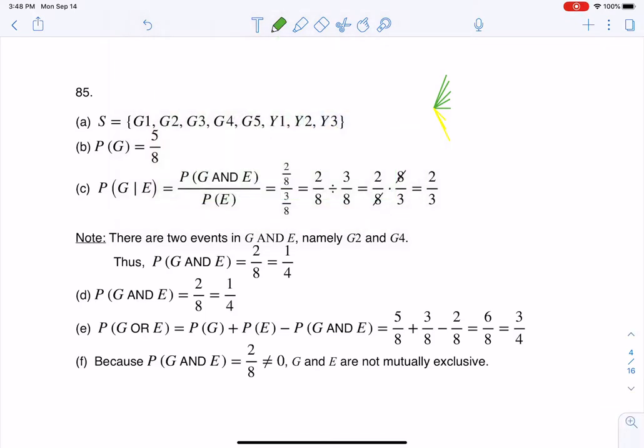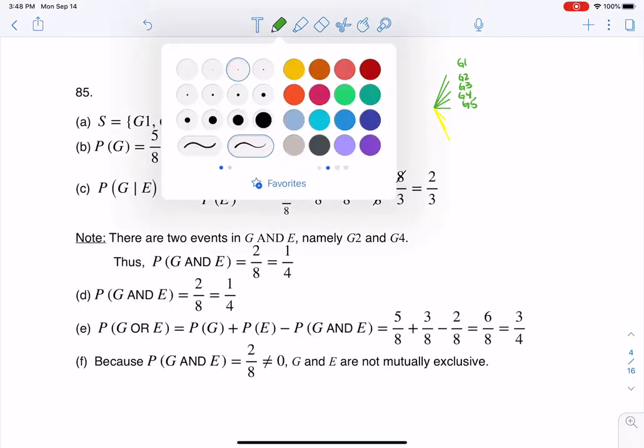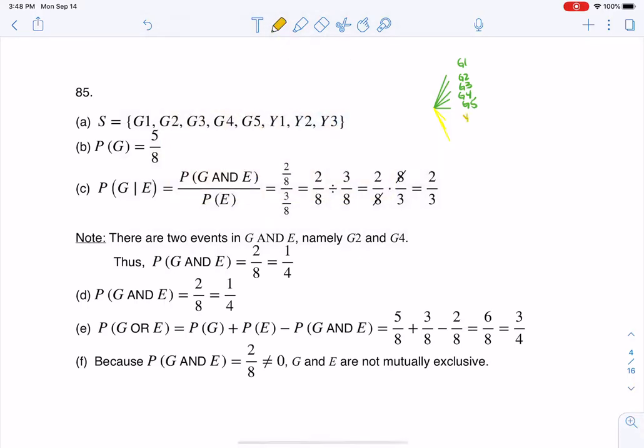But here we go. So I'm going to put right G1, G2, G3, G4, G5, and let me see if I can get a darker yellow. I'll do this one. So we'll go Y1, Y2, and Y3, and that's it.